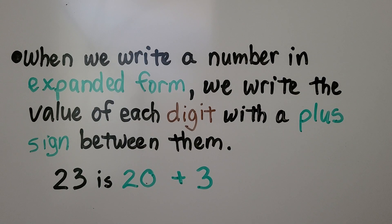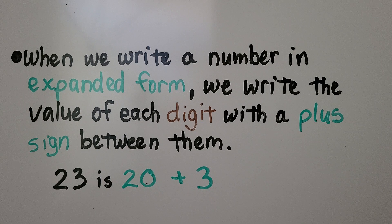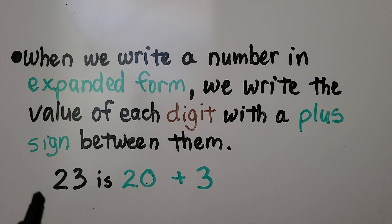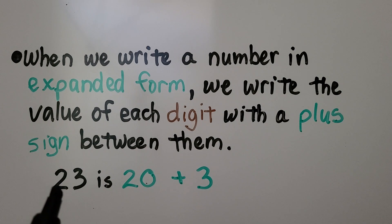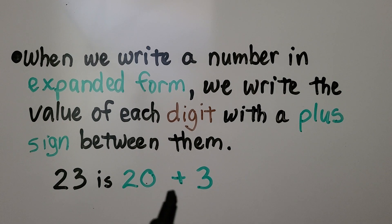When we write a number in expanded form, we write the value of each digit with a plus sign between them. 23 is 20 — we have a two here, that's two tens, that's 20 — plus the three ones.